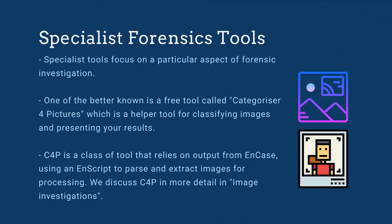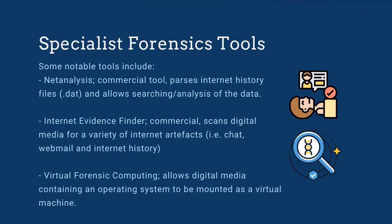Specialist tools focus on a particular aspect of forensic investigation, for example categorizing images or recovering internet artifacts. The range of tools and software is vast, including commercial and free offerings. One of the better known is a free tool called Categorizer for Pictures, or C4P, a helper tool for classifying images. C4P relies on output from EnCase, using an EnScript to parse and extract images for processing. Another common theme for specialist tools is internet artifacts, ranging from recovering internet cache data and web pages to analyzing internet history or recovering chat transcripts. Internet artifacts often contain a large amount of useful evidence and are a common focus for investigations.